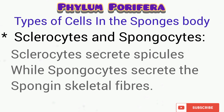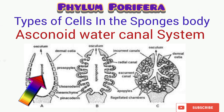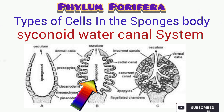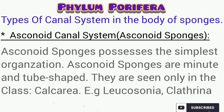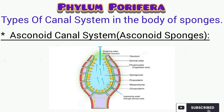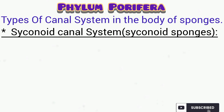Let's talk about the canal system in the body of sponges. We have three canal systems in the bodies of sponges: the asconoid canal system — where the sponges are called asconoid sponges — the syconoid canal system, and the leuconoid canal system. The asconoid sponges possess the simplest organization and they are usually minute and tube-shaped, as you can see in the diagram. They are found in the class Calcarea, and examples include the Leucosolenia species and the Clathrina species.